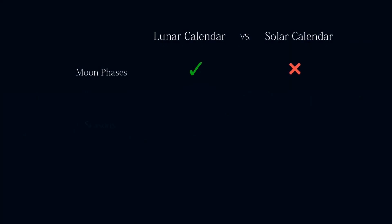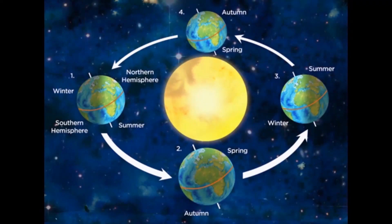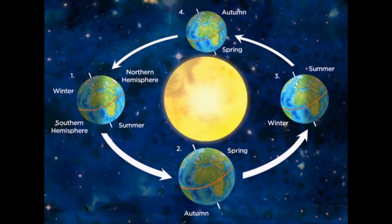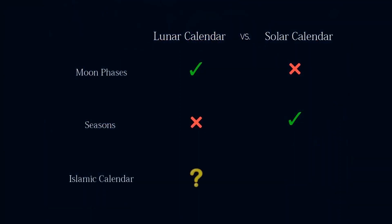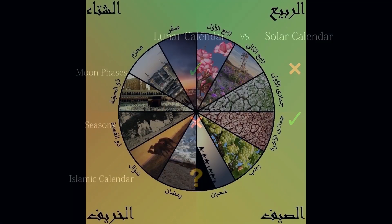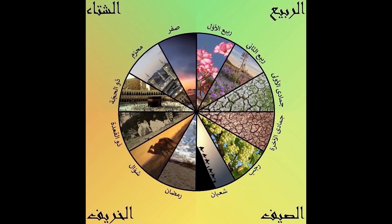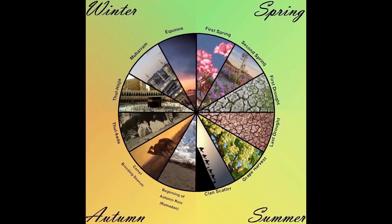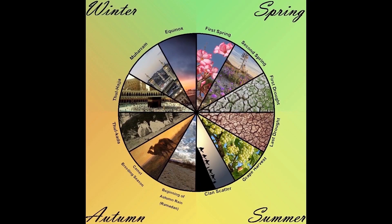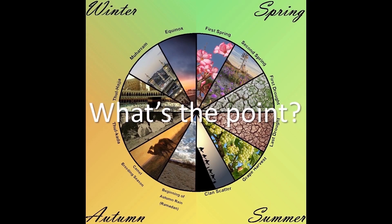On the other hand, the solar calendar is a more reliable way to keep track of seasons because, unlike the lunar calendar, months do not change seasons from year to year. Many people believe that the Islamic calendar is a lunar one. Yet, upon closer examination of the meanings of the Islamic months, it becomes clear that most of the months define distinct seasonal events. But what's the point if the calendar is lunar? What's the point of calling a month Rabi' al-Awwal, first spring, if it can fall in spring, summer, autumn, or winter depending on the year? So it's possible that the Islamic calendar is actually not lunar.